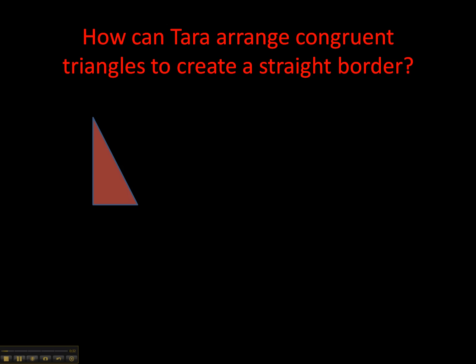On page 266, we have a character who's called Tara. She's creating a backsplash over the kitchen counter. She wanted to know if she could use triangular tiles to create a straight border with no empty spaces. Here's an example of the tile that she has. It just so happens that the tile she's chosen is called a right triangle because it has a right angle in it.